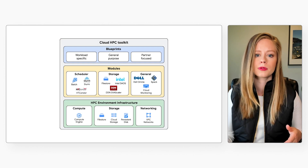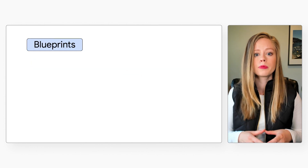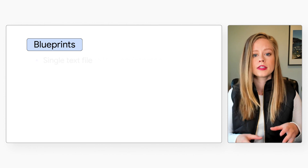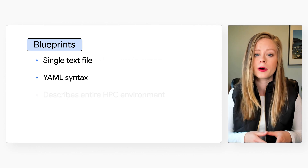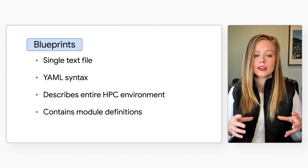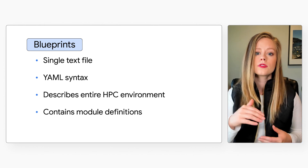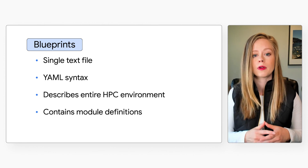Now let's talk about the blueprints. The blueprint is your design plan referencing a list of modules and how they're all interconnected. A blueprint is the only part that you need to understand to deploy your HPC cluster. It's a simple text configuration file, or a YAML file, that composes your entire HPC environment, including the infrastructure and software. The HPC Toolkit provides a set of supported and tested standard blueprints that you can use as is, or customize based upon your specific use case and requirements.